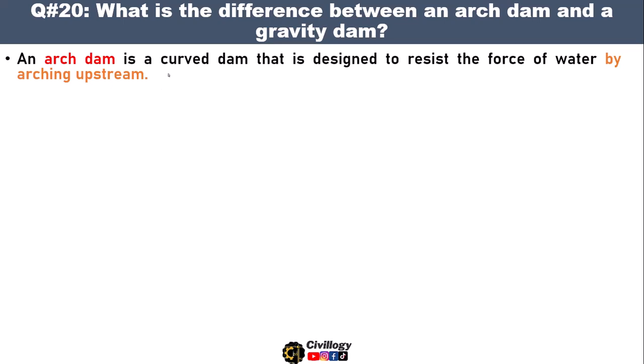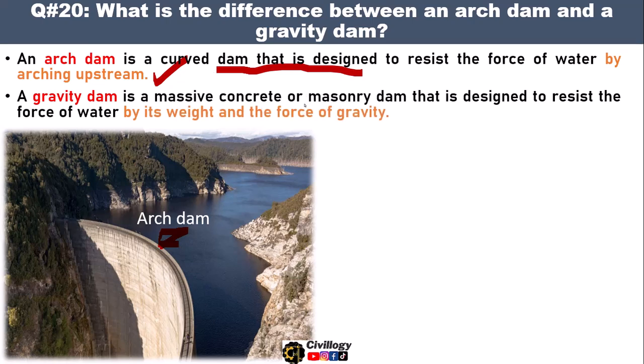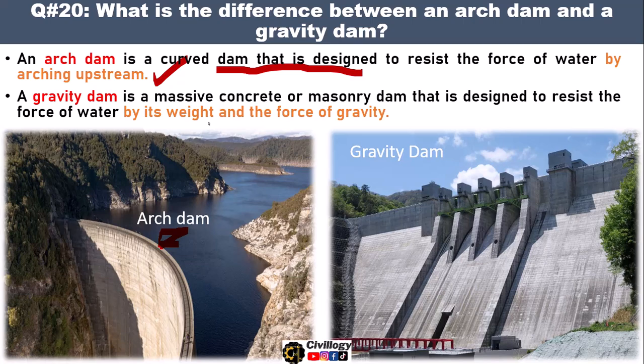Question number twenty: what is the difference between an arch dam and a gravity dam? An arch dam is a curved dam that is designed to resist the force of water by arching upstream. Whereas a gravity dam is a massive concrete or masonry dam that is designed to resist the force of water by its own weight and the force of gravity — its large volume and heavy weight stabilize it and allow it to store water behind it.